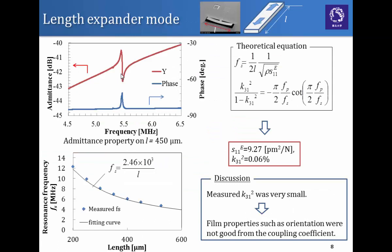And this is the result of the length expander mode. This is the typical admittance properties and this is the tendency of the resonance frequency which changes with resonator length. From these results and theoretical equations, s11e and K31 squared can be measured as following. For discussion, measured K31 squared was very small. So we estimated film properties such as orientations were not so good from these results.